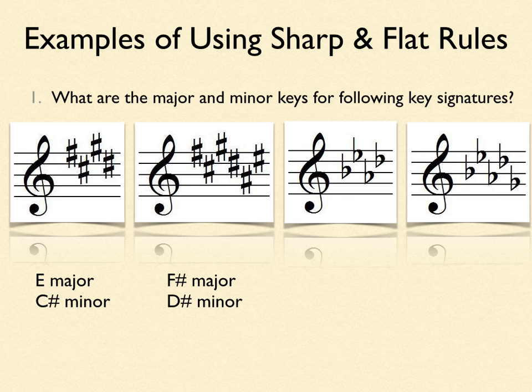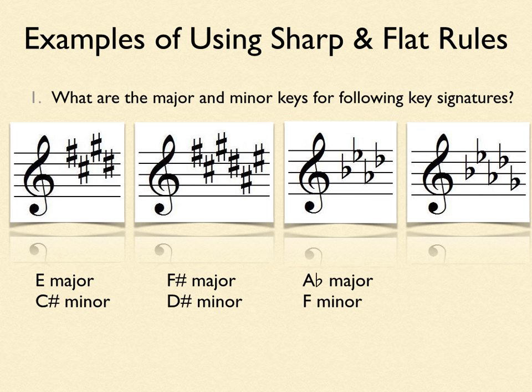Now for the flat examples. The first has four flats: B flat, E flat, A flat, and D flat. Using the flat rule — "Blanket Explodes And Dad" — find the last flat (D flat) and count one flat back. The flat before D is A, so A flat is the key. This key signature could be A flat major, or count down three semitones for its relative minor: F minor.